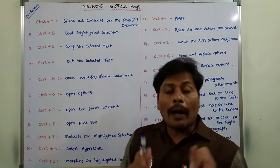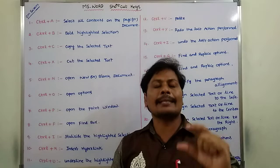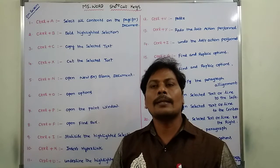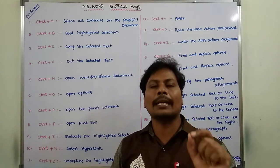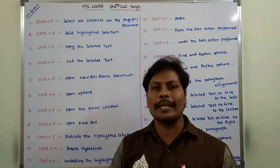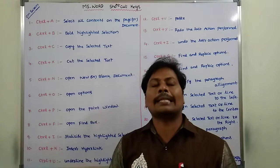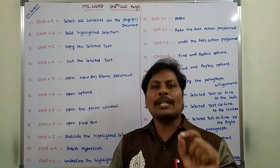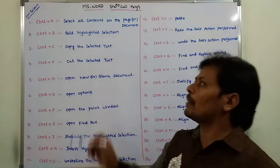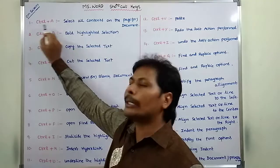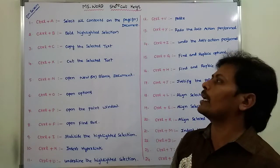Suppose there are five pages with text, and you are on the second page and want to select that page's information — for that purpose, we have to use Ctrl plus A.